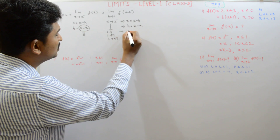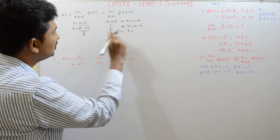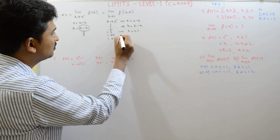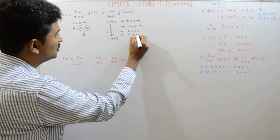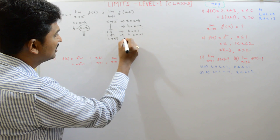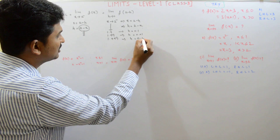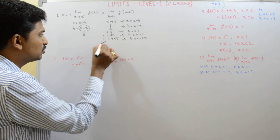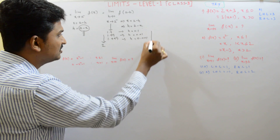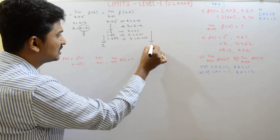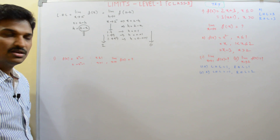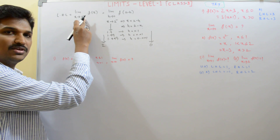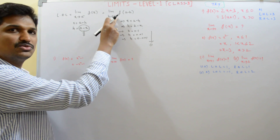Substitute these values — what do you get for h? 2 minus 1.9 gives 0.1, then 0.01, then 0.001. What you can identify is: as x approaches to 2 from left, h approaches to 0 from right. So, as x approaches to a from left is nothing but h approaches to 0.